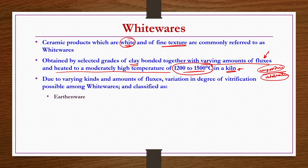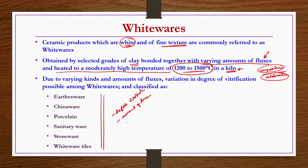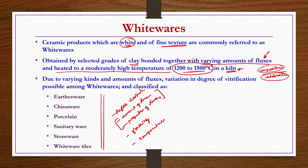Based on the degree of vitrification, composition, and applied temperature, whitewares may be further classified into several types: earthenware, chinaware, porcelain, sanitaryware, stoneware, and whiteware tiles. These classifications are based on degree of vitrification, amount and properties of fluxes, glazing, applied temperature to get required vitrification, and resistance to abrasion.